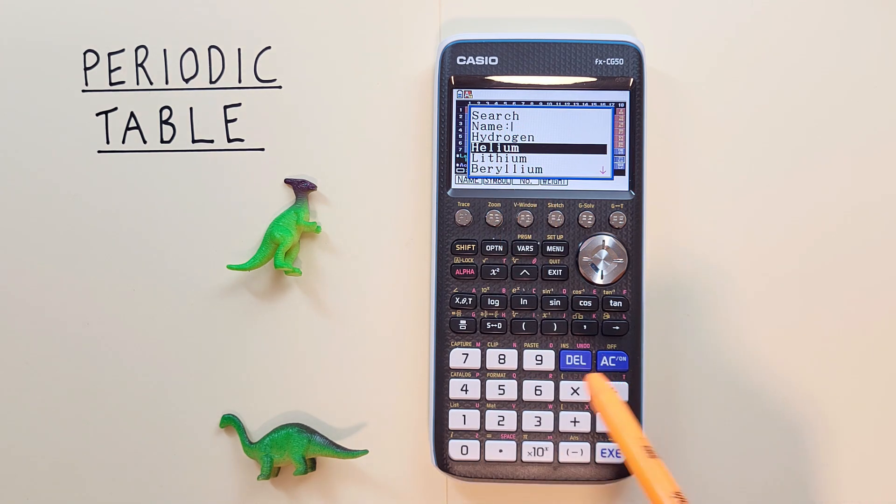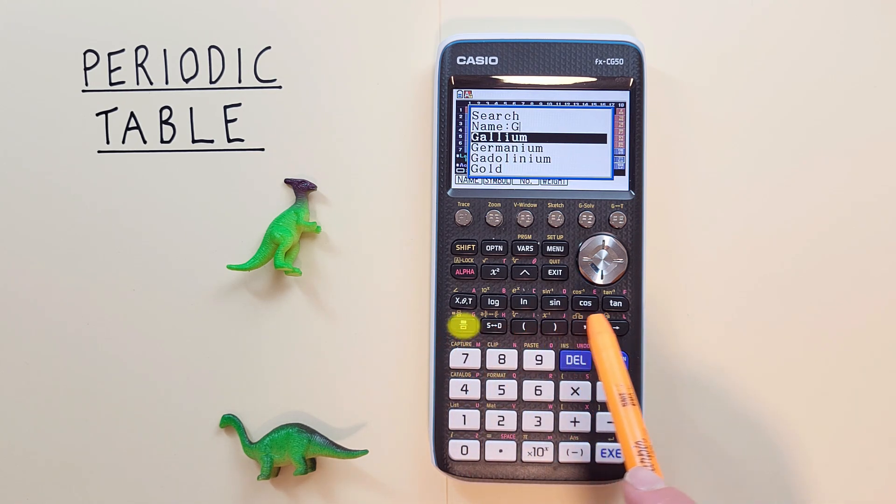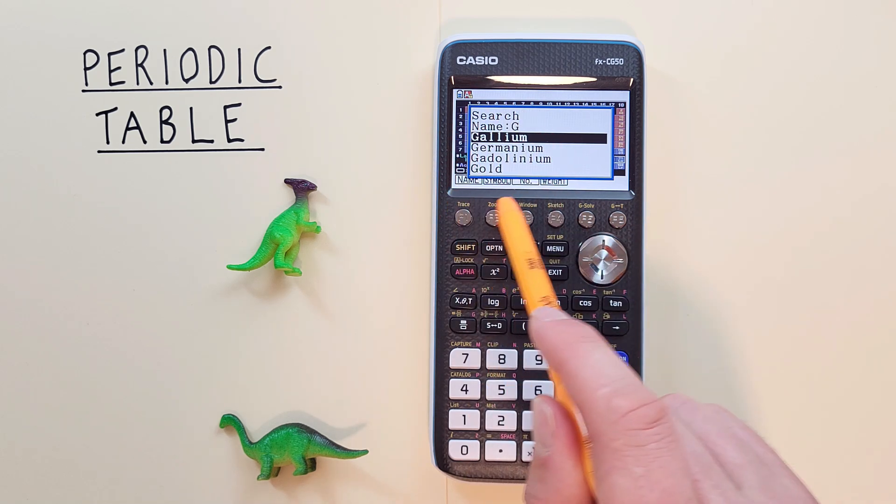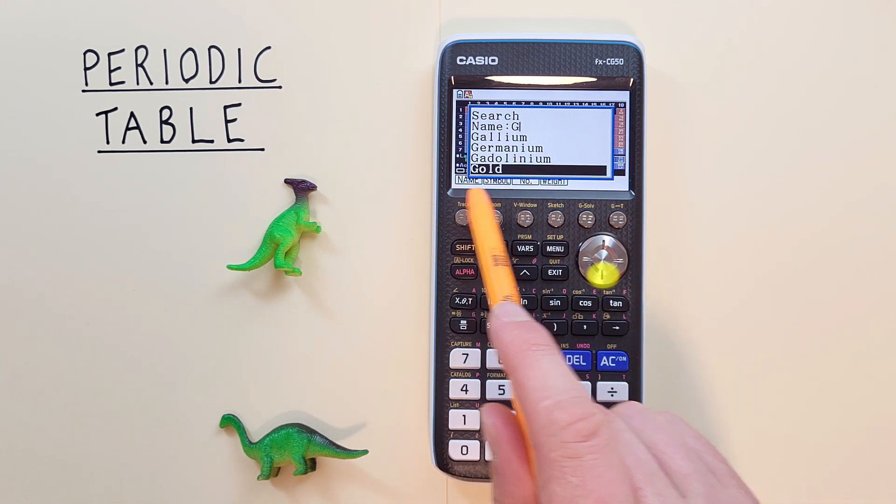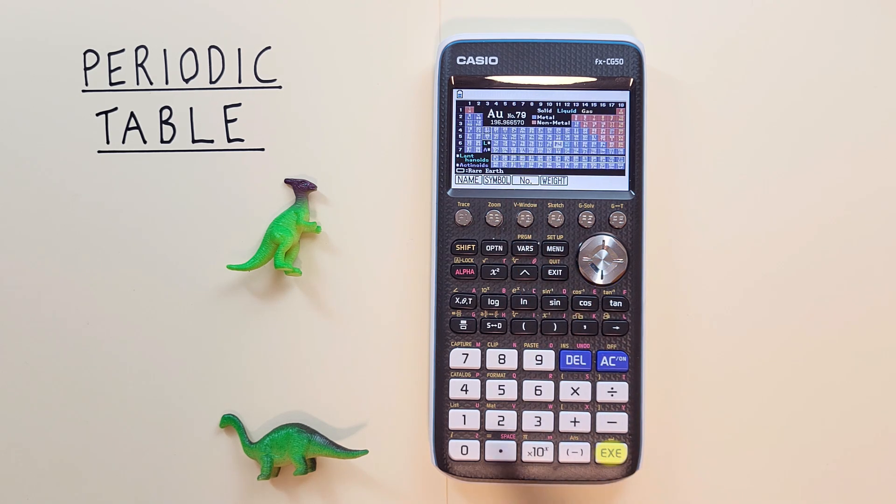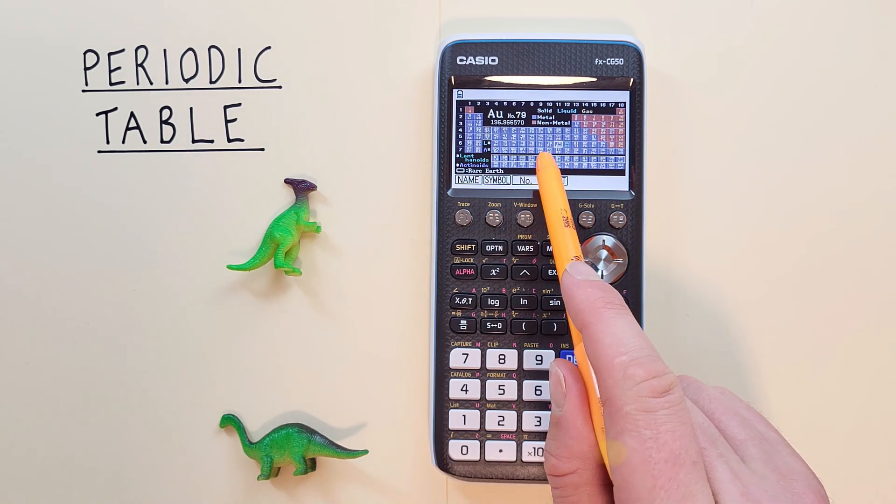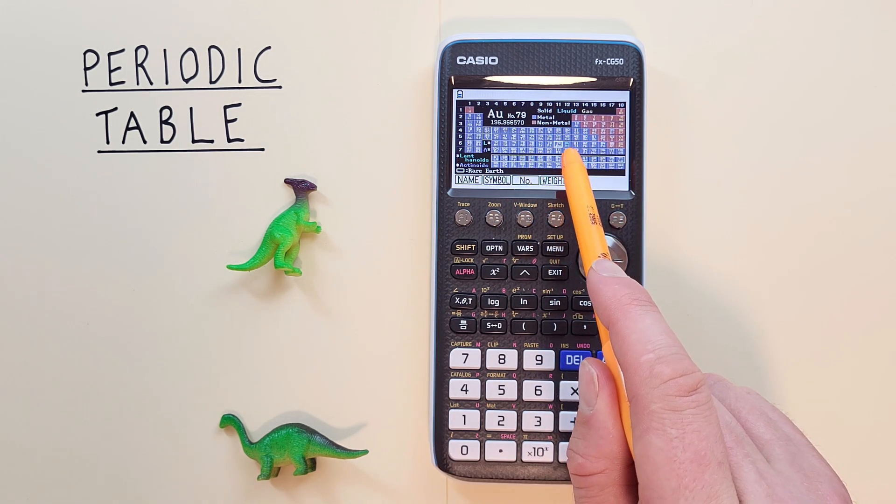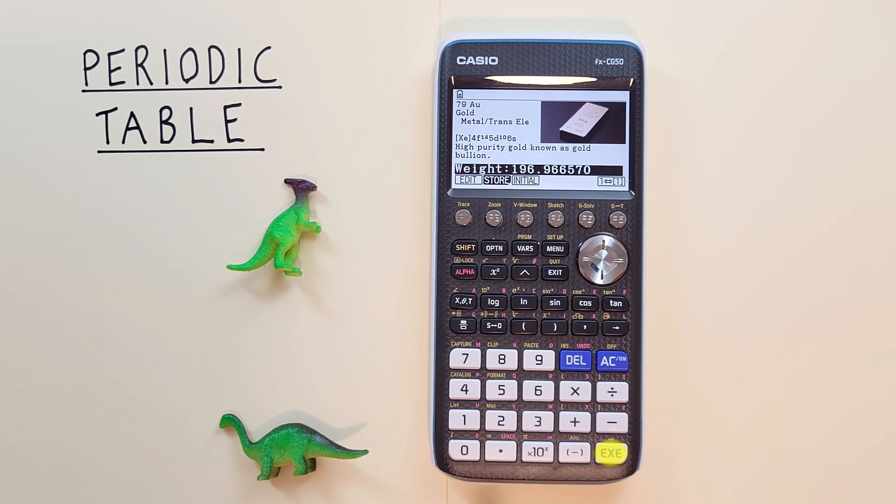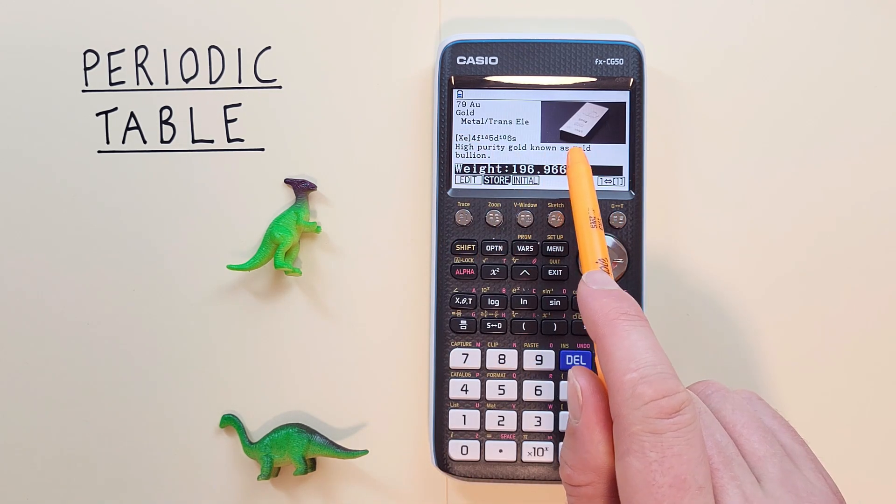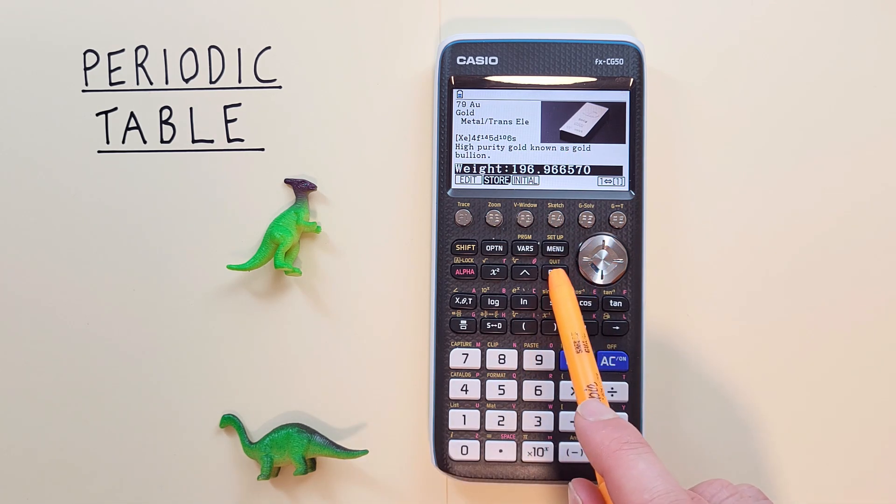You just start by keying that in with the red letters above the keys here. So G, and you can see it's already gone to G's. So if we scroll down, highlight gold, select that, our cursor has automatically gone to AU number 79. And if we select it, we see that's gold. And we can go back with the EXIT key.